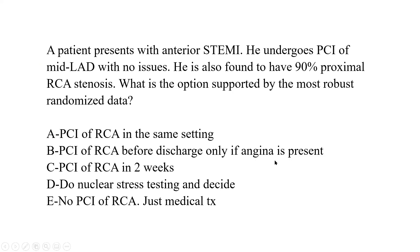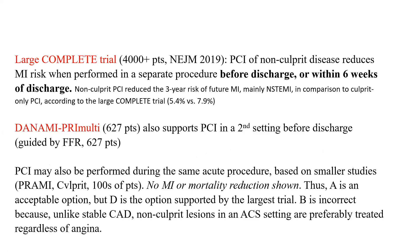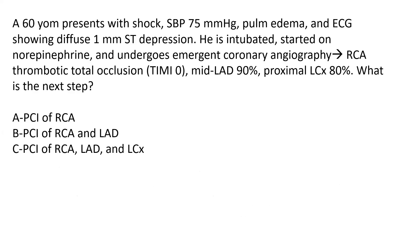B is incorrect because unlike stable CAD where angina drives the indication, this is the only context where we treat asymptomatic disease — the MI setting, including non-culprit MI lesions.